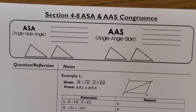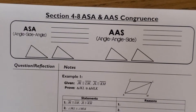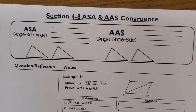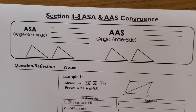Welcome to section 4.8. Today we are talking about ASA and AAS congruence. Hopefully you have an idea of what that means. In section 4.7 we talked about side-side-side and side-angle-side, so today we're working with things that have two angles instead of two sides.